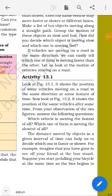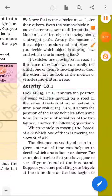The answer is the distance moved by objects in a given interval of time can help us to decide which one is faster or slower. It means whatever the distance they have covered, whatever the distance vehicle covered in a straight line path, but time remains fixed.